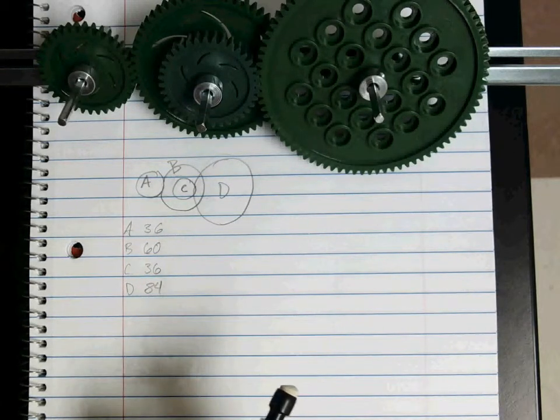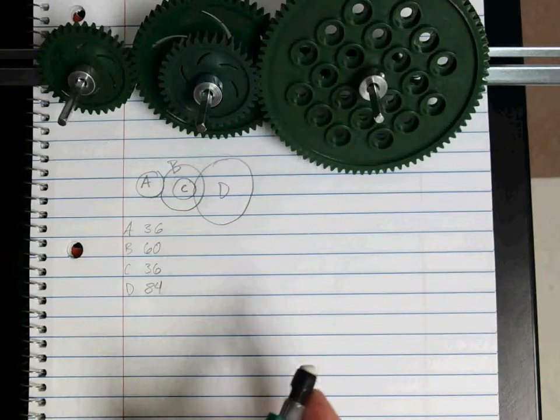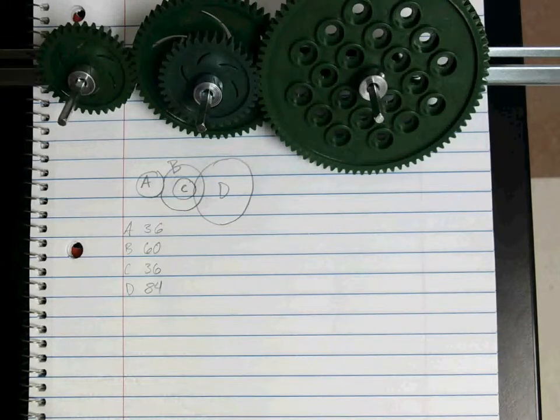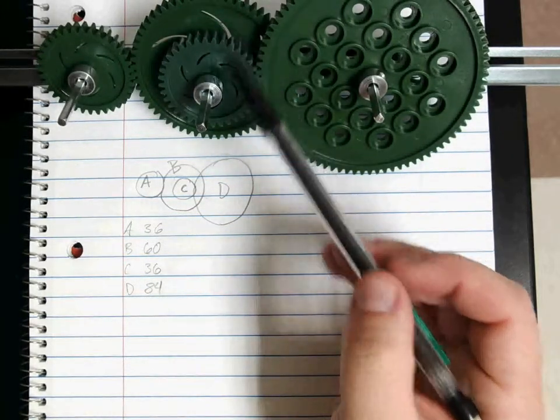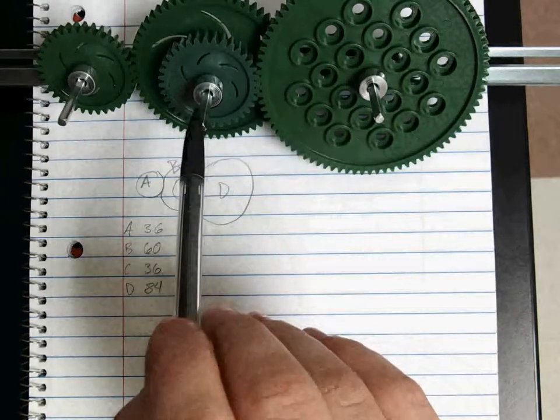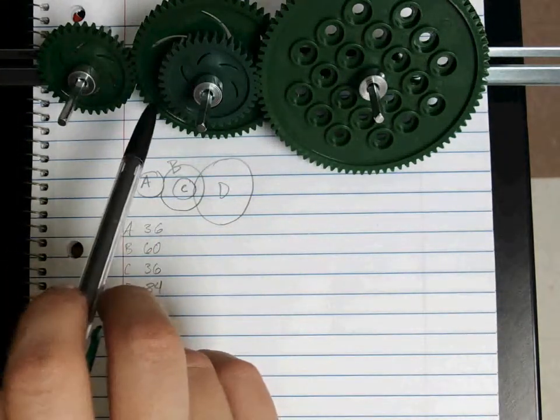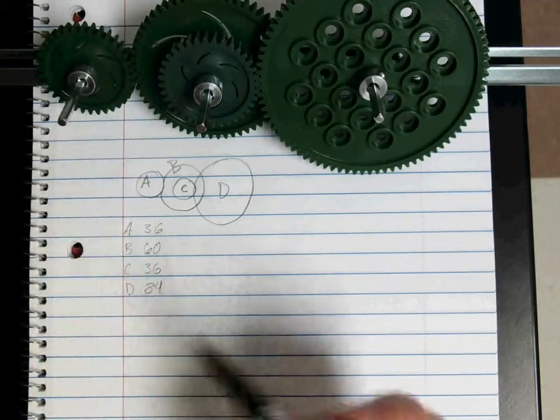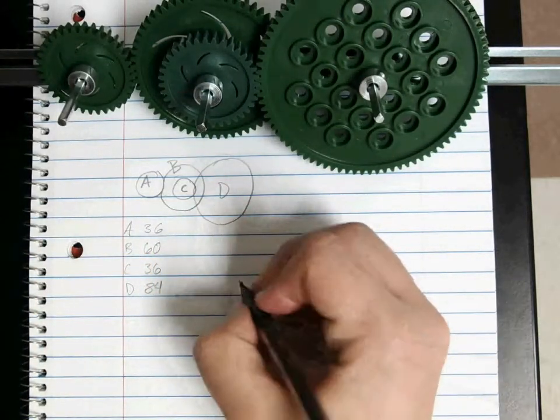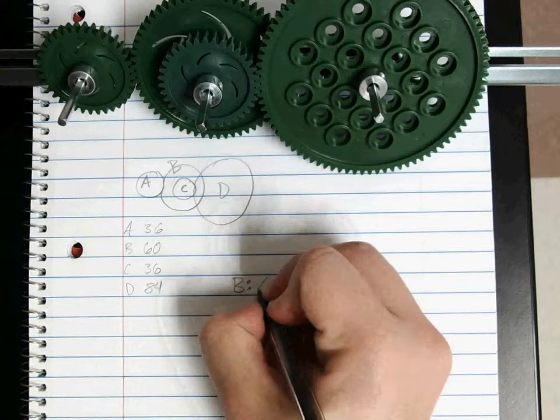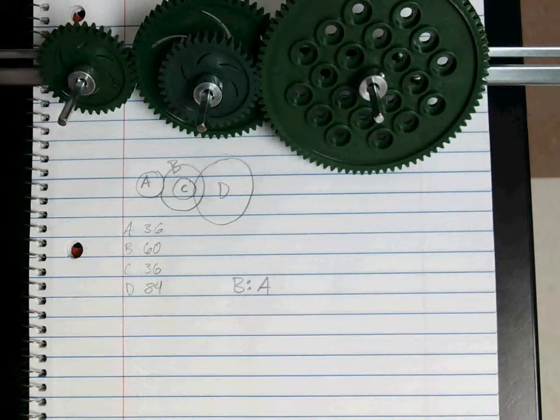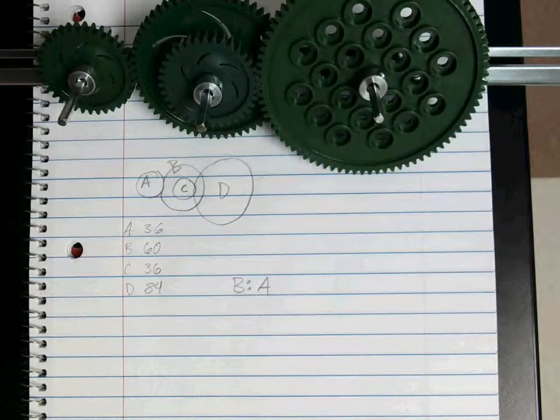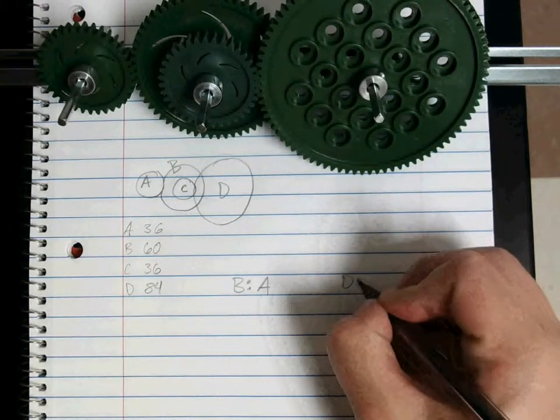So what we'll do for this one, we're going to calculate our gear ratio, but since these two are on the same axle, we don't have to calculate the ratio between B and C. Since they're going the same speed, they're on the same axle. So we really just need our ratio for B to A, and then for D to C.